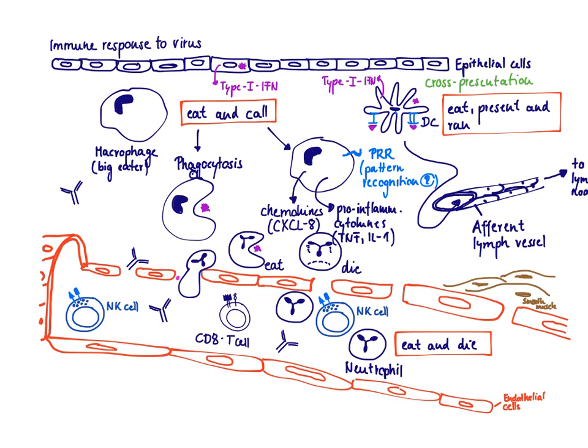The dendritic cell will run off to the lymph node, initiate a CD8 T-cell response, and then the CD8 T-cells will come back via the lymph and thoracic duct into the blood, using the roll-stop-exit strategy to get to the site of infection and help clear it, because they can directly kill virally infected cells.